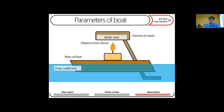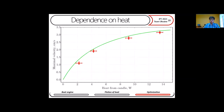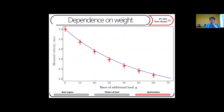Now let's move to optimization. An important parameter of the boat is the heat which the boiler gains from the candle — it depends on the distance from the flame and also the boiler area. Another parameter is the mass of the boat, and one of the most important parameters is the drag coefficient of our boat. First of all, we change the distance between the candle and the boiler, and change the power which the boiler gains. We observe that with increasing heat, the maximum velocity also increases.